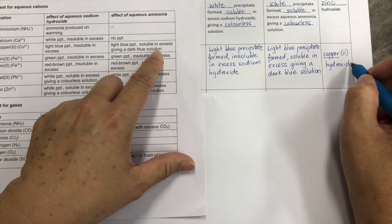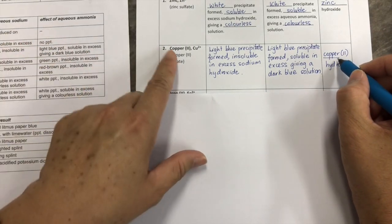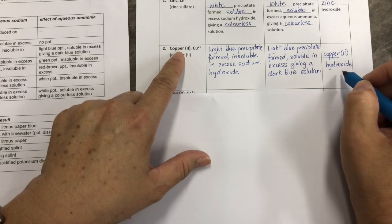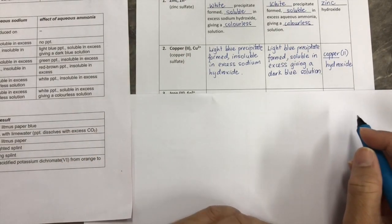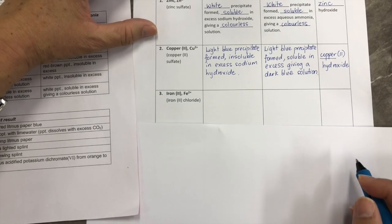As for the name of the precipitate, it will be the cation that you are testing, which is copper-2-hydroxide. You can continue with the rest of the cation recording.